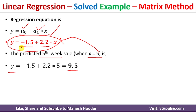Once we get the linear regression equation, we have predicted the sales for the fifth week as 9.5. In the previous video I discussed linear regression using the normal tabular method; here I have shown how to apply linear regression in matrix form. I hope the concept is clear. If you like the video, please like and share with your friends, subscribe for more videos, and press the bell icon for regular updates. Thank you for watching.